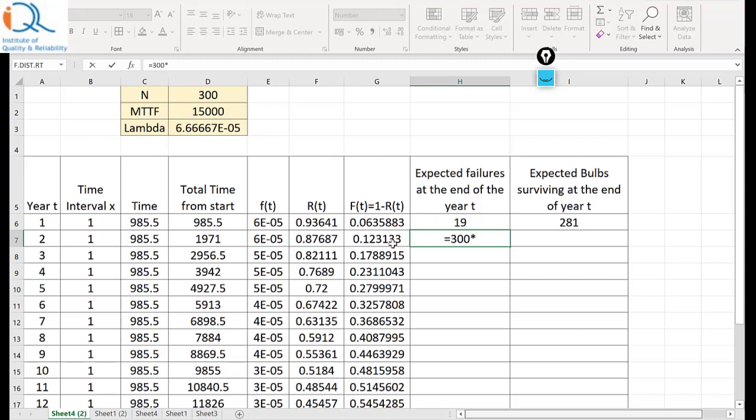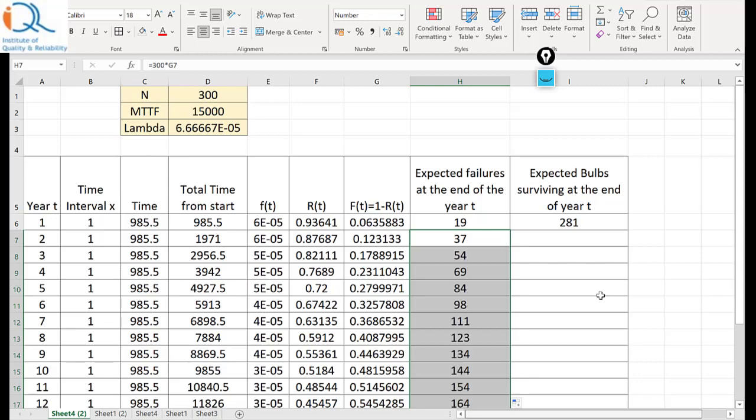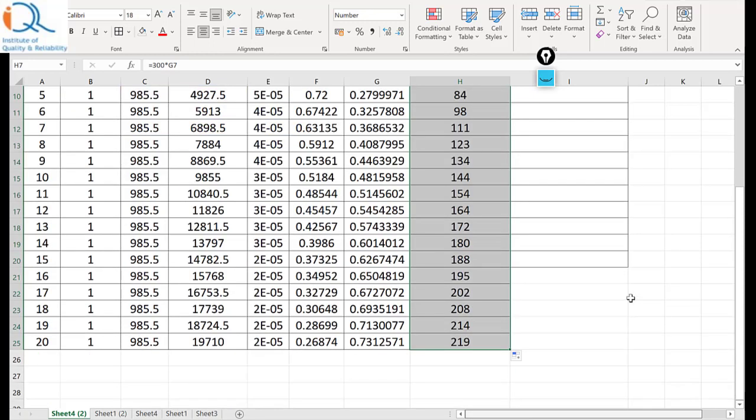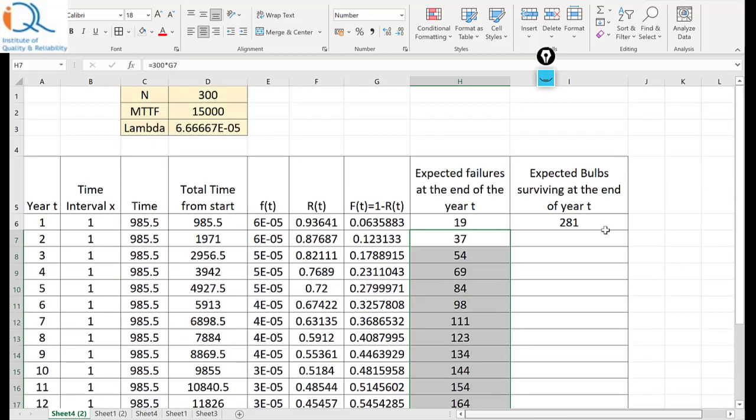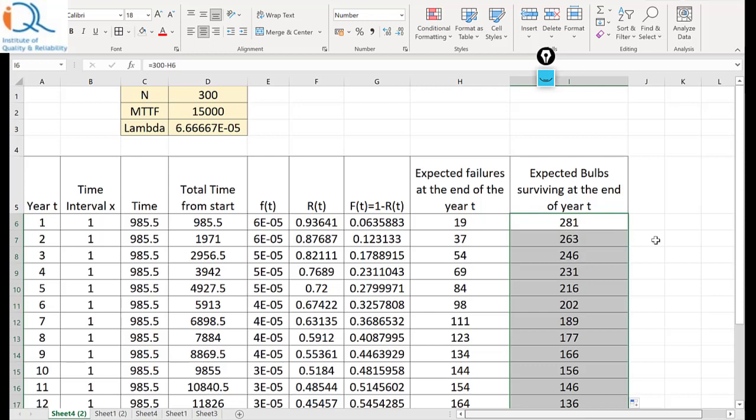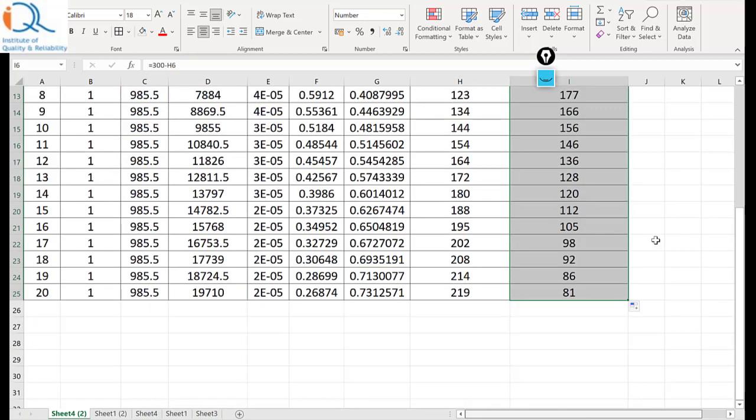For the second year I can say that it is equal to 300 star probability of failure up to second year. So obviously every year you will have more and more failures. And expected bulbs surviving at the end of each year would be something like this.